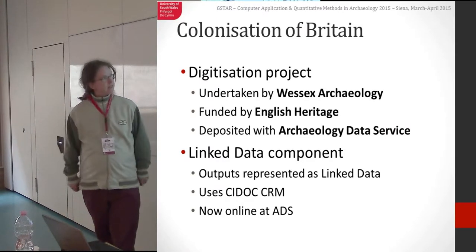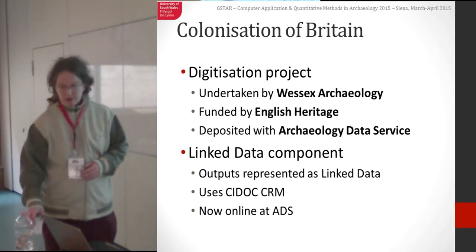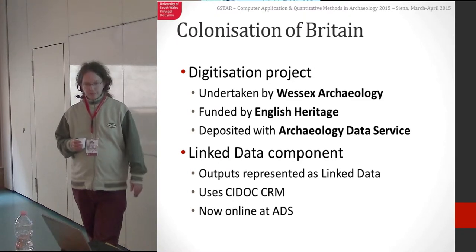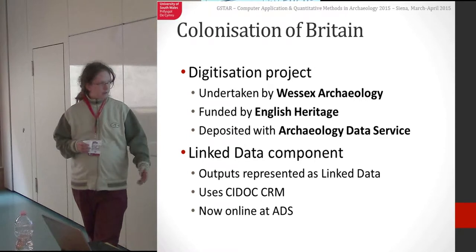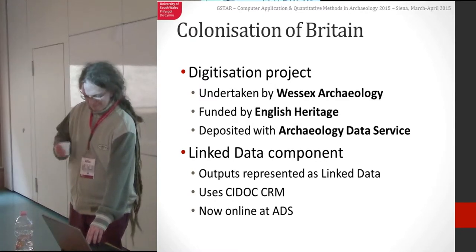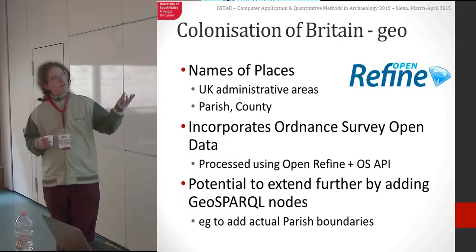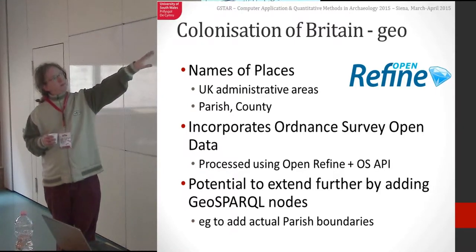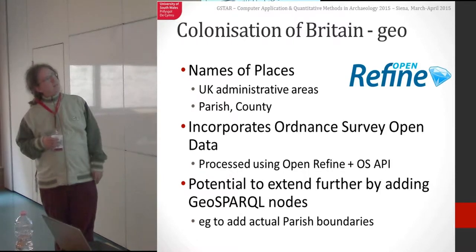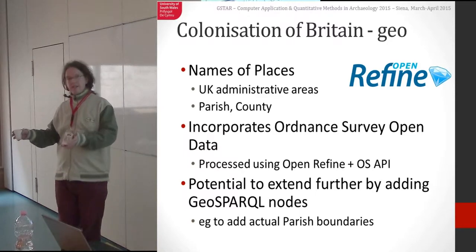So a couple of case studies. This is an example of a project-specific resource that was created. The original project was undertaken by Wessex Archaeology with funding from English Heritage, and it's now been deposited at the ADS. One of the outputs was a linked data component, which I built for them using CIDOC CRM and the Stellar Toolkit from the University of South Wales. Although this wasn't a linked geospatial data resource, I couldn't resist — so I did put some geo in there. There were place identifiers in the resource. In the UK we have small land divisions called parishes and slightly bigger ones called counties. Using the OpenRefine system and the Ordnance Survey's API, it was possible to integrate the Ordnance Survey's linked data within this resource.